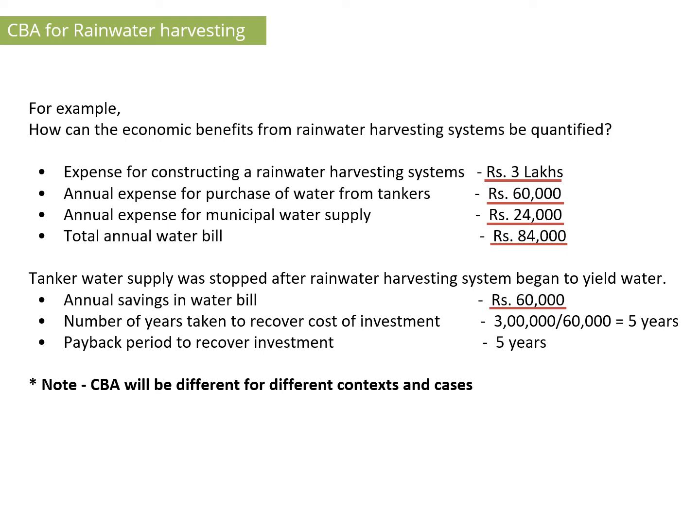The number of years taken to recover the cost of investment is: ₹3 lakhs (total construction expense) divided by ₹60,000 (annual savings on water bill) equals 5 years. So the total payback period to recover the investment is 5 years. I hope you understand this calculation clearly. The course ends here — thank you so much.